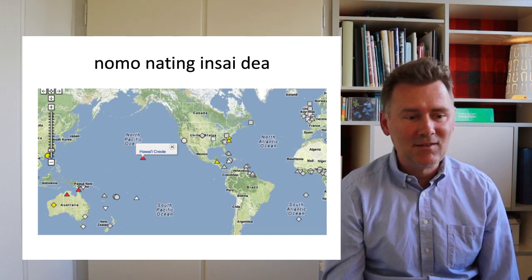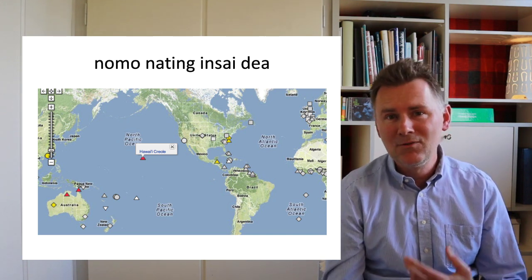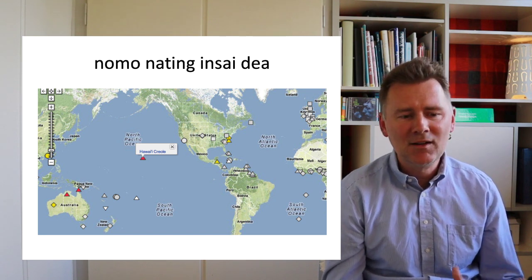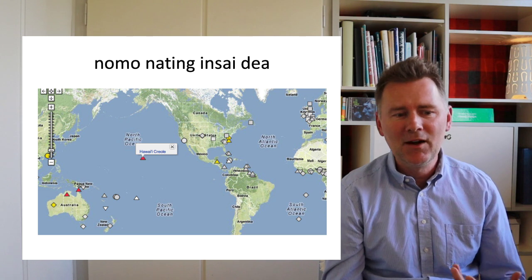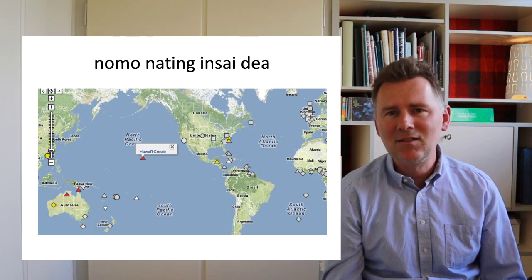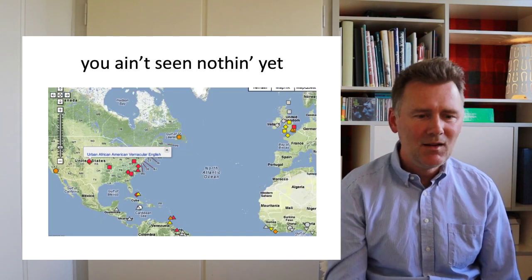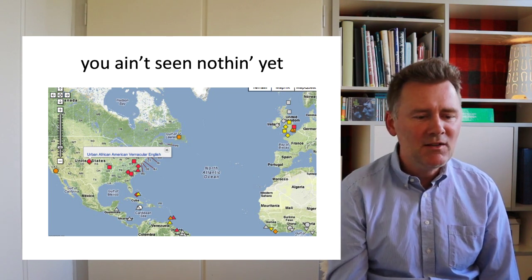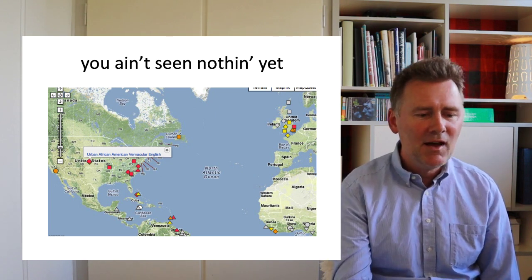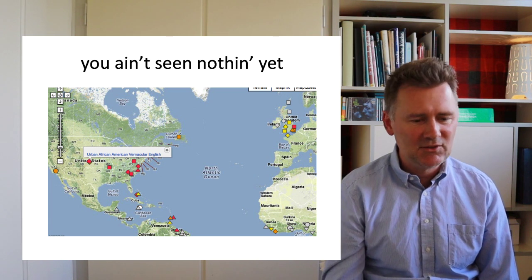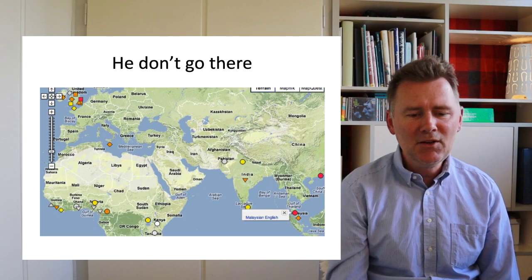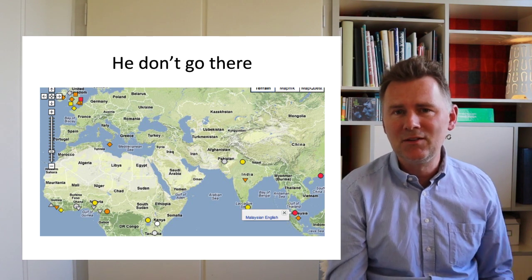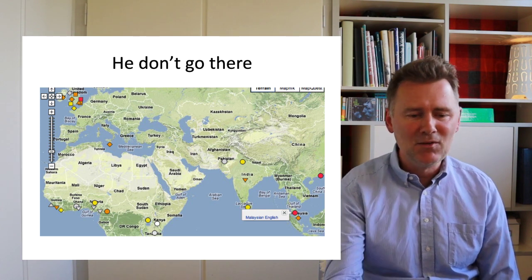Here we have the negative existential 'no more.' In Hawaiian Creole, you can say things like 'no more nothing inside there' — meaning there is nothing inside there. 'You ain't seen nothing yet' is a feature of many varieties, including African-American Vernacular English. 'He don't go there' would be a feature of Malaysian English, which we saw a couple of minutes before.